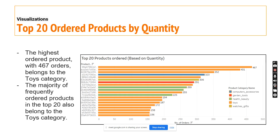Moving on to a few visualizations and observations: starting with the top 20 ordered products by quantity. We can see that the highest product ordered, with 467 orders, belongs to the toys category, and even in the top 20 ordered products, most of them belong to the toys category itself.